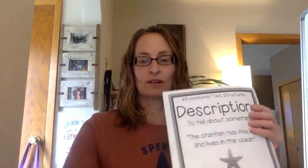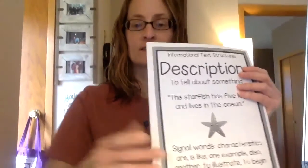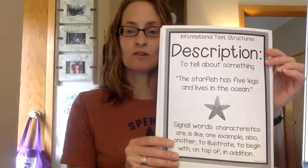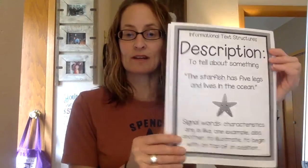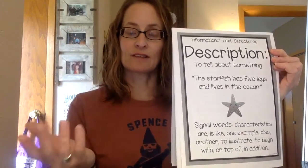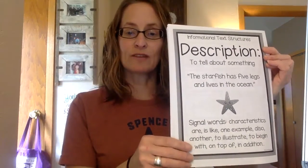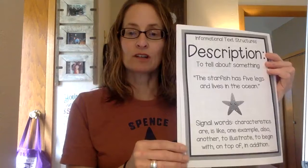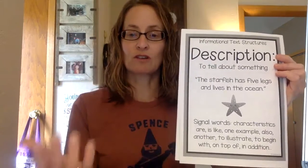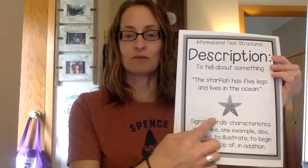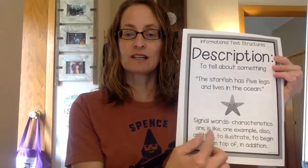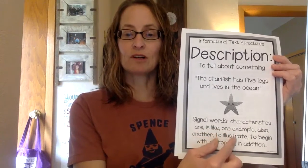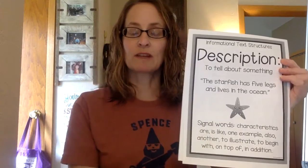The first text structure we're going to focus on this week — and it's in your packet — is description. Description text structure is just to tell about something. For example: the starfish has five legs and lives in the ocean. When you're reading informational text, authors are going to give you information to describe whatever they're trying to teach you about.